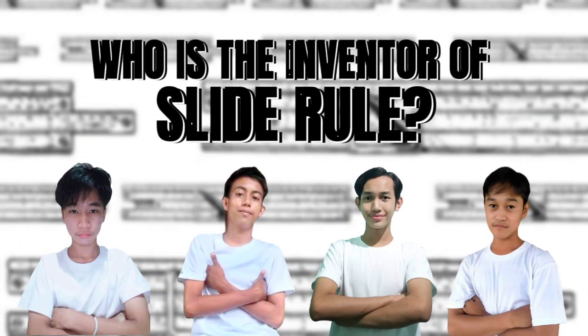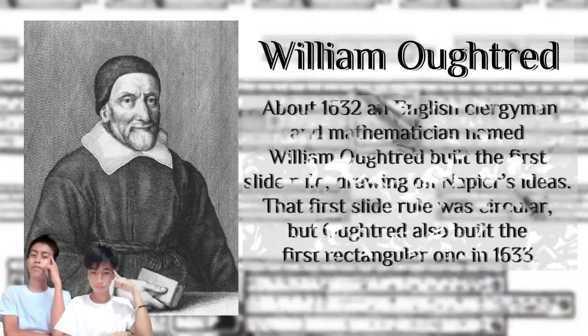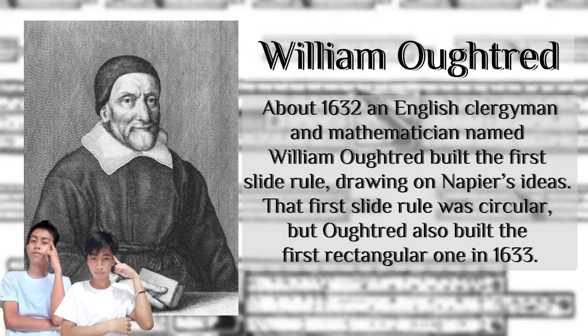Who is the inventor of the slide rule? William Orchard — around 1630, an English clergyman and mathematician named William Orchard built the first slide rule, drawing on Napier's ideas. That first slide rule was circular, but Orchard also built the first rectangular one in 1633.